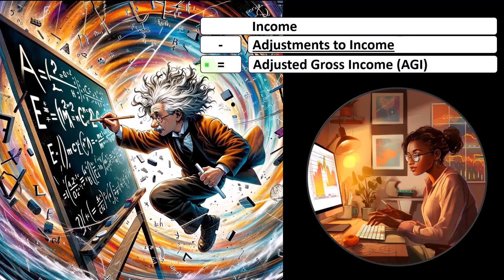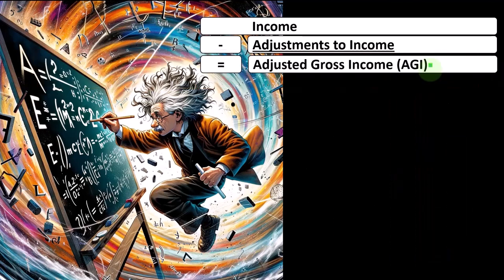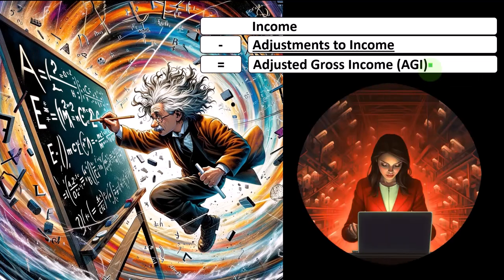That gets us to a subtotal, adjusted gross income or AGI. So you can kind of think of this if you had an income statement that sells like manufacturing, like inventory, you could have returns and allowances on an income statement.